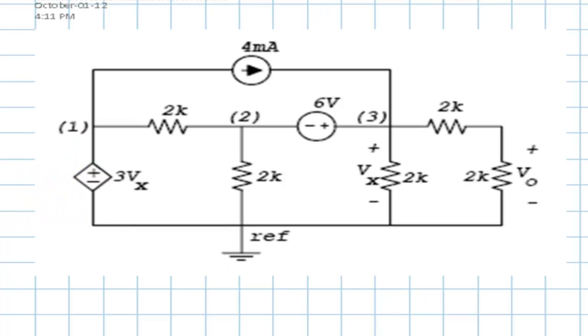The first step in an MNA solution, according to what we've seen in class, is to choose the reference node. But they have already chosen the reference node for us. The second one is identify every true node in the circuit apart from the reference: 1, 2 and 3. They've already been identified for us.